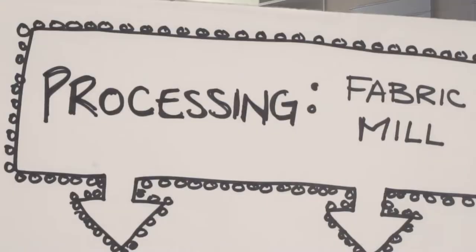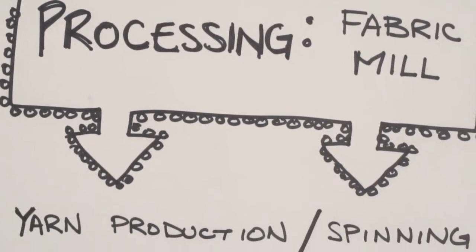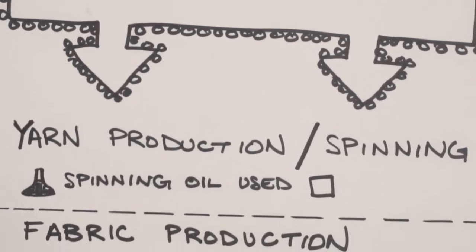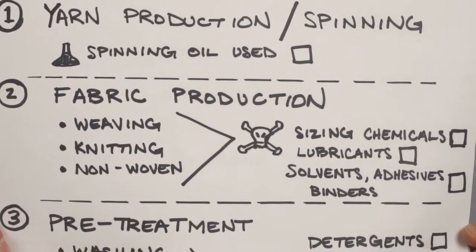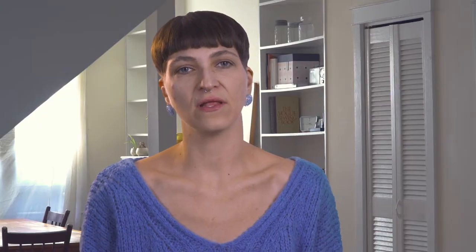That brings us to the next topic of how our fibers are shipped — the processing of fabric. The yarn needs to be produced by spinning. Spinning production means oils to lubricate the fibers so the spinning process can be much easier. Number two is the fabric production: weaving, knitting, and also non-woven. There are a lot of chemicals involved in this process — the breaking down of fibers and the sizing chemicals and lubricants used in producing these yarns into fabric.